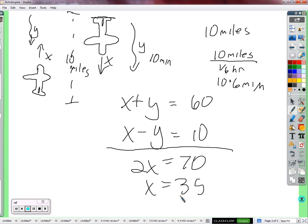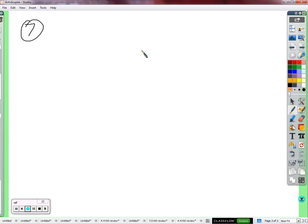So, if x is 35, then I guess y would have to be 25. 35 minus y equals 10. Solve for y. We'll certainly find that it's 25. So, the speed of the plane must be 35, slow plane, and the speed of the wind must be 25.